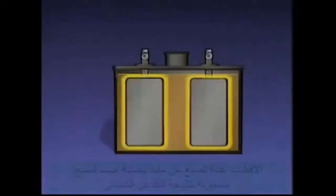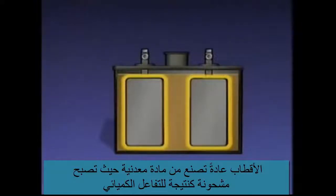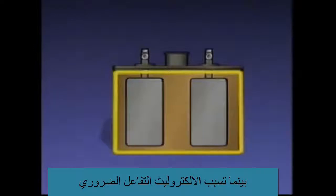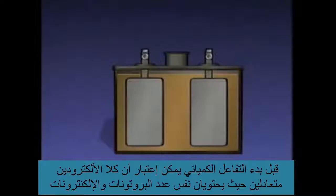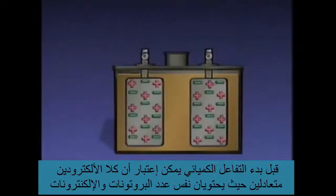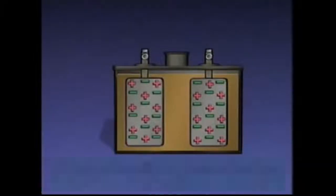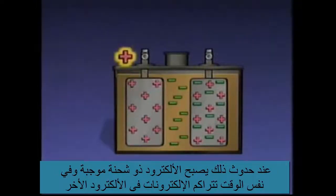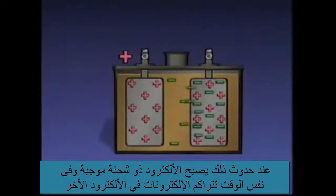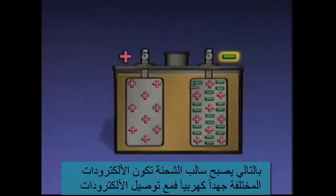The electrodes are generally some type of metallic material that becomes charged as a result of a chemical reaction. The electrolyte is the chemical that causes that reaction. Before the reaction begins, both electrodes are electrically neutral — they have an equal number of protons and electrons. The chemical reaction in a battery causes electrons to leave one electrode, making it positively charged, while electrons build up on the other electrode, making it negatively charged.